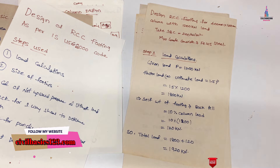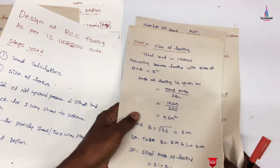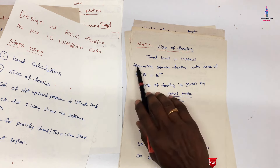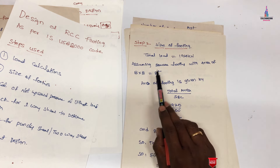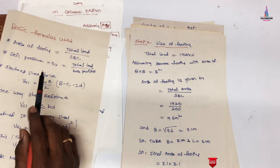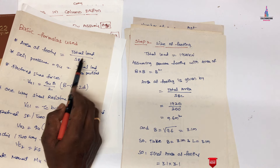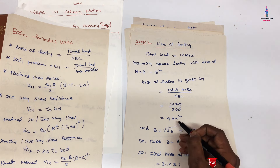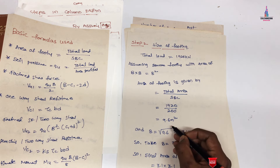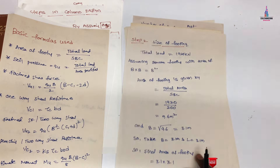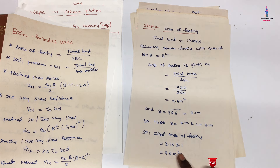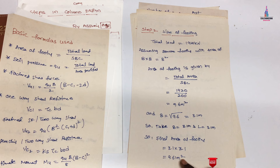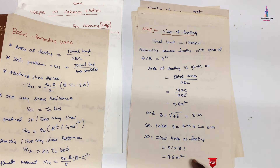Step 2 is the calculation of the size of the footing. The total load is 1920 kN. Assuming a square footing with area = B², area of footing = total load / SBC = 1920 / 200 = 9.6 m². Taking the square root gives B = 3.1 m per side. Therefore, the provided footing area = 3.1 × 3.1 = 9.61 m².